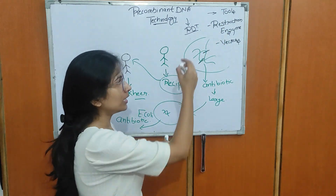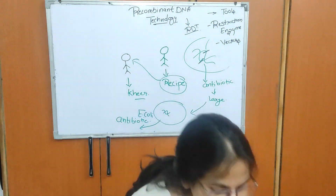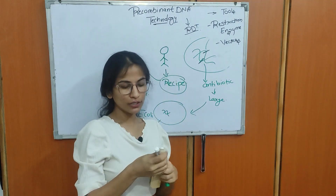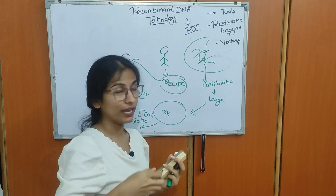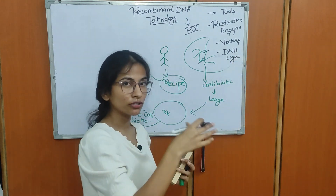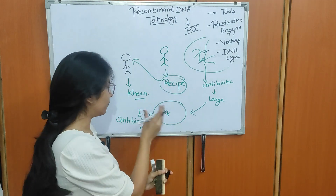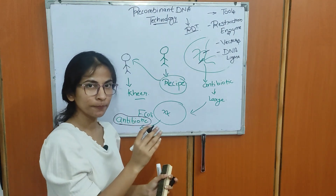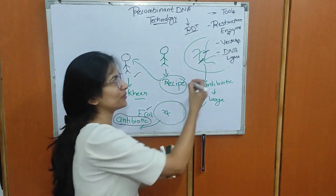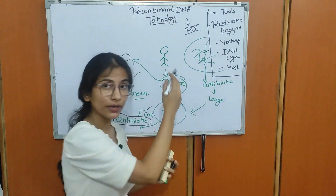I have cut this gene out and I need to paste it onto my vector, so I require a molecular glue. Our molecular glue is DNA ligase. DNA ligase functions as the molecular glue. Lastly, I would require a competent host where I can produce this particular antibiotic on a large scale, which would be E. coli. So these are all the tools I will require to conduct the process of RDT.